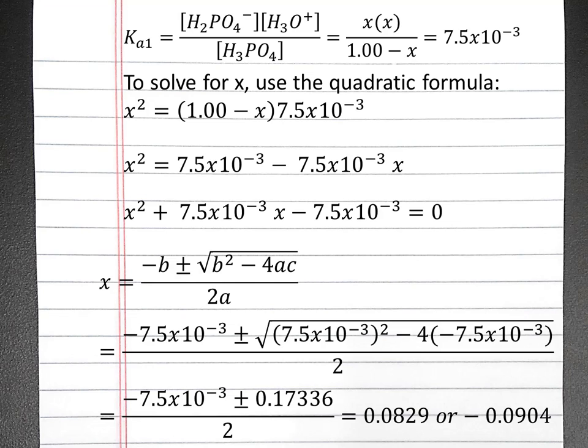If you put this into your calculator, you should get 0.0829 or negative 0.0904. Only the positive number will make sense given our RICE table. Notice that our 0.0829 is fairly far away from our 0.0866 we got using our simplifying assumption, so our simplifying assumption added in too much error.